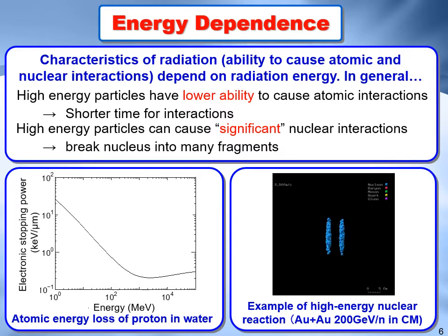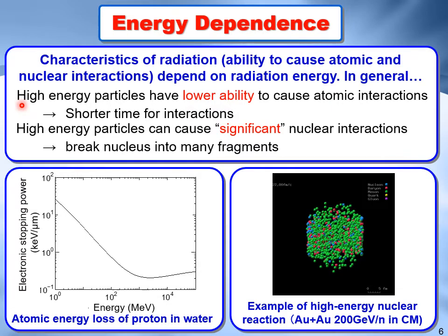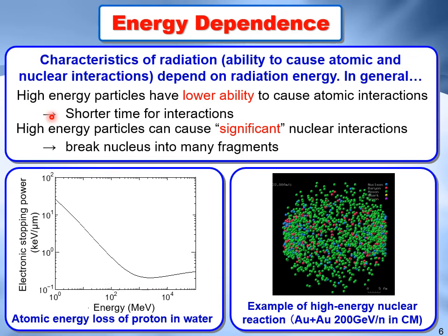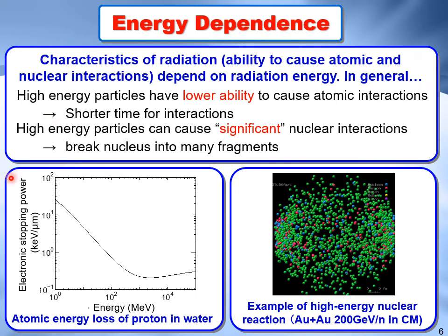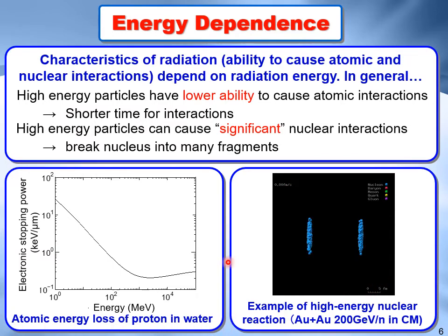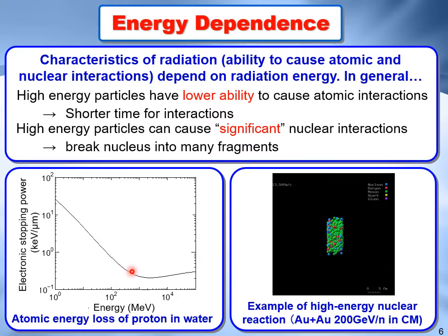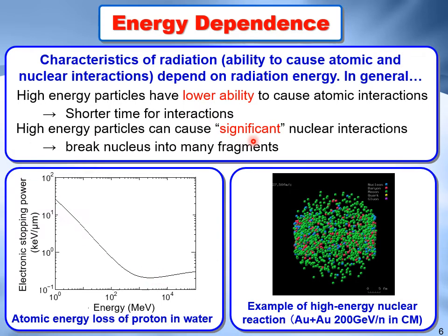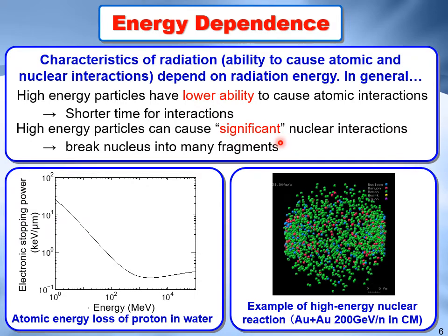The characteristics of radiation also depend on radiation energy. In general, high energy particles have a lower ability to cause atomic interactions because of shorter interaction time. This graph shows the atomic energy loss of a proton in water as a function of proton energy. As you can see, the atomic energy loss becomes smaller with increasing energy up to around 1 GeV. On the other hand, high energy particles can cause significant nuclear interactions and break nuclei into many fragments.